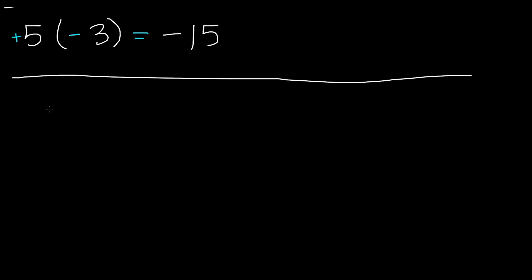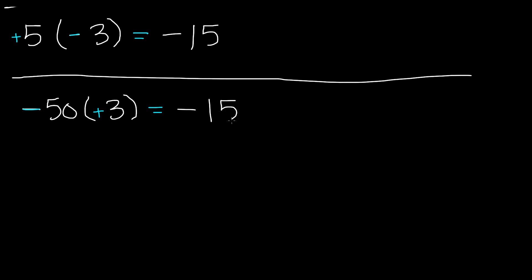Now let's do another problem. We have negative 50 times 3. Negative 50 is a negative number, and 3 is a positive number. Now we are multiplying two different integers with two different signs, so our answer is going to be a negative product. When you multiply 50 times 3, you get 150, so our answer is going to be negative 150.